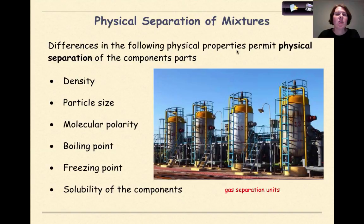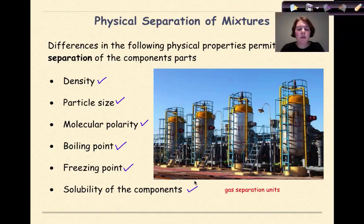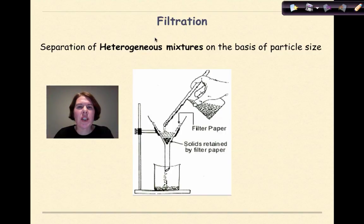Physical separation of mixtures. Differences in the following physical properties permit physical separation of the component parts. In order to physically separate a mixture, we might look at the density of the particles involved, the particle size, molecular polarity, boiling point, freezing point, or the solubility of the components. One example of physical separation is filtration.